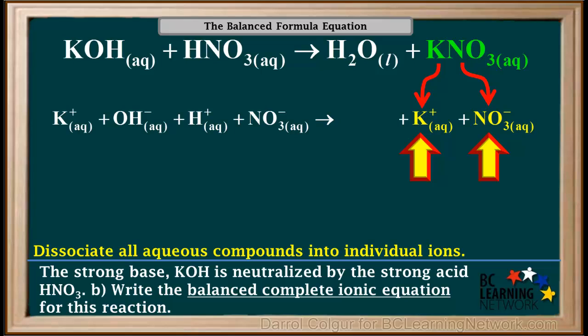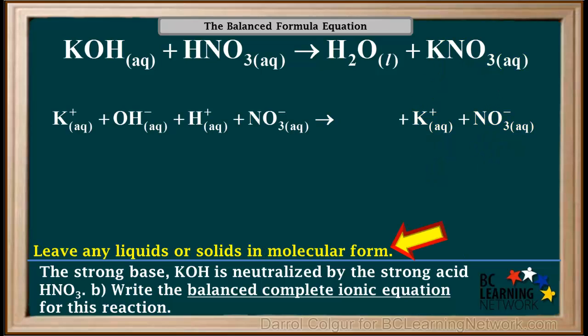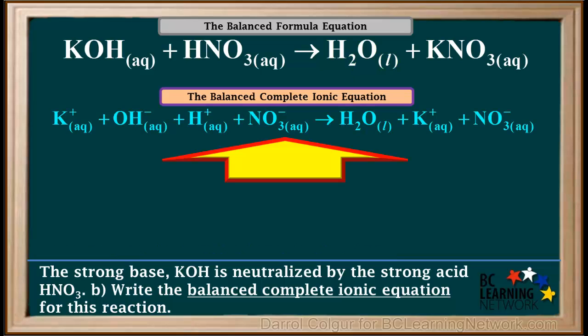The soluble salt KNO3 dissociates completely into one K+ and one NO3− ion. Remember, we leave any liquids or solids in molecular form, so we write H2O liquid for the water in the complete ionic equation, the same as it was for the formula equation. We have now finished the balanced complete ionic equation for this neutralization reaction.